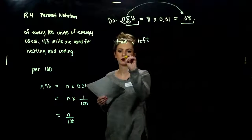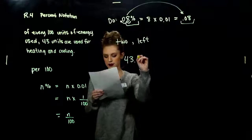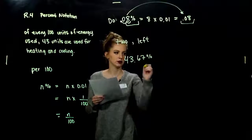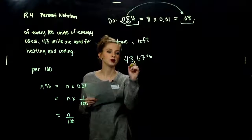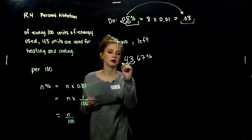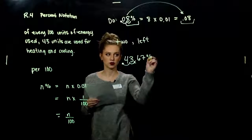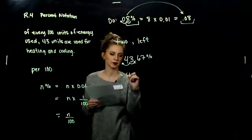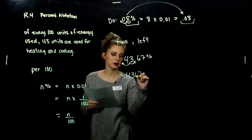Convert 43.67% to a decimal. I move two to the left, make my new decimal point, drop the percentage sign. That gives us 0.4367.